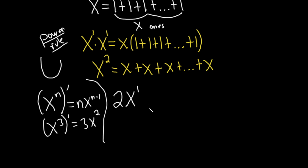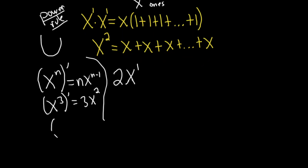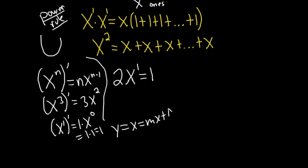When taking the derivative of x, you can think of it as x to the first power. Bringing down the 1 and subtracting 1 minus 1 gives x to the 0, which is 1, so you get 1 times 1, which is 1. The derivative of x is just 1. Another way to think about it: since the derivative is the slope and y equals x has a slope of 1, the derivative is 1. So we differentiate each x on the right-hand side and get 1 plus 1 plus dot dot dot plus 1.